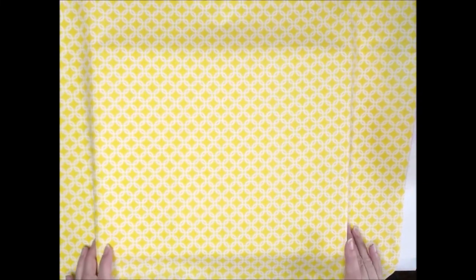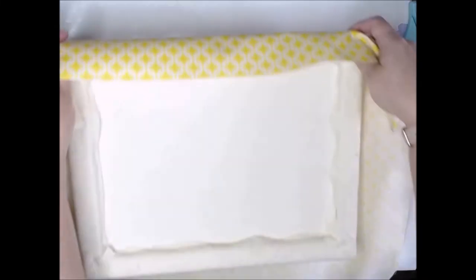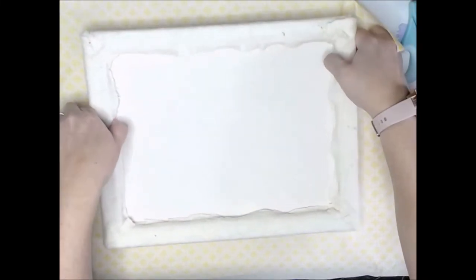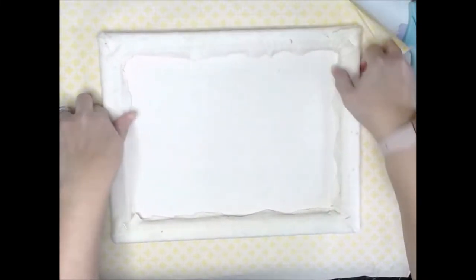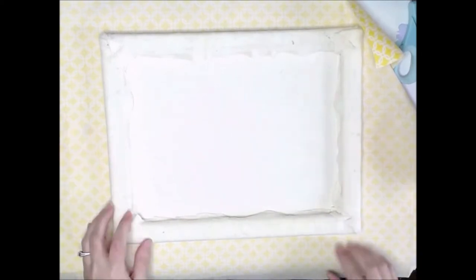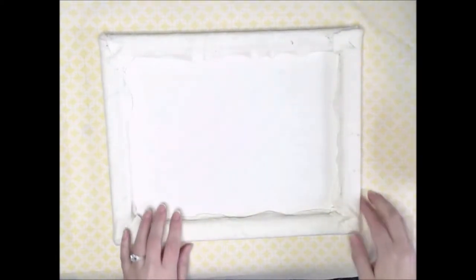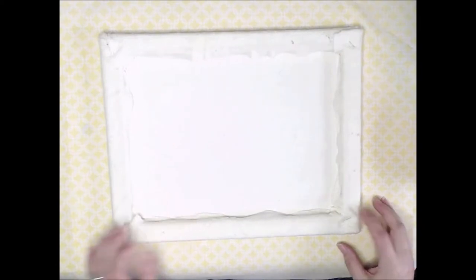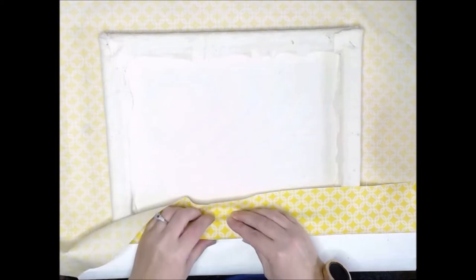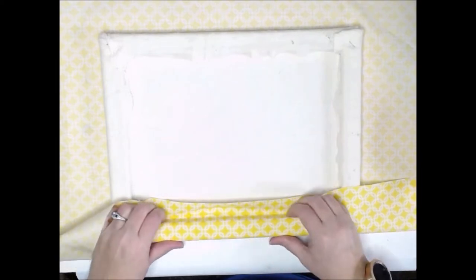And we're ready to start placing the fabric on the front. We're going to pretty much repeat the process that we did with the batting. We're just going to turn it over. And while we are going to be more careful, since this does have a pattern to it, to be sure things are lined up exactly straight. Looks pretty good. And we are going to fold it over. And we are going to start stapling this in as well.